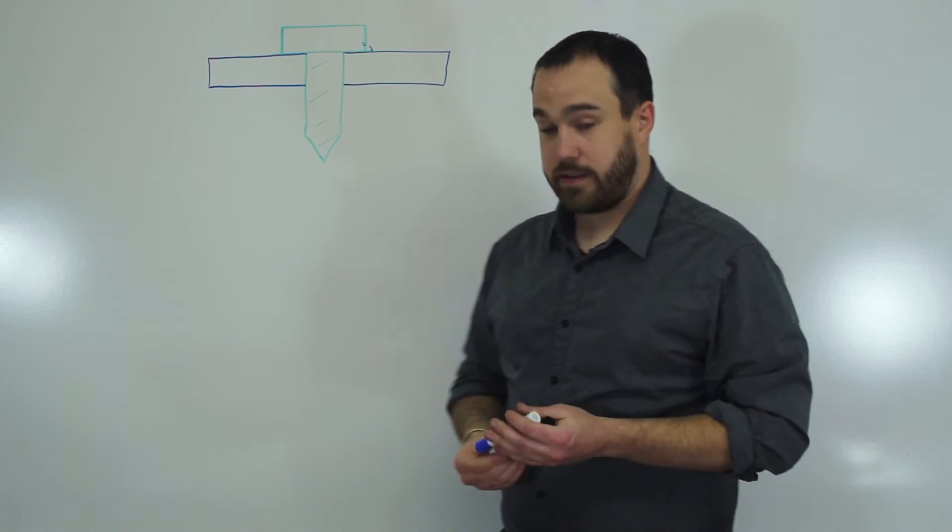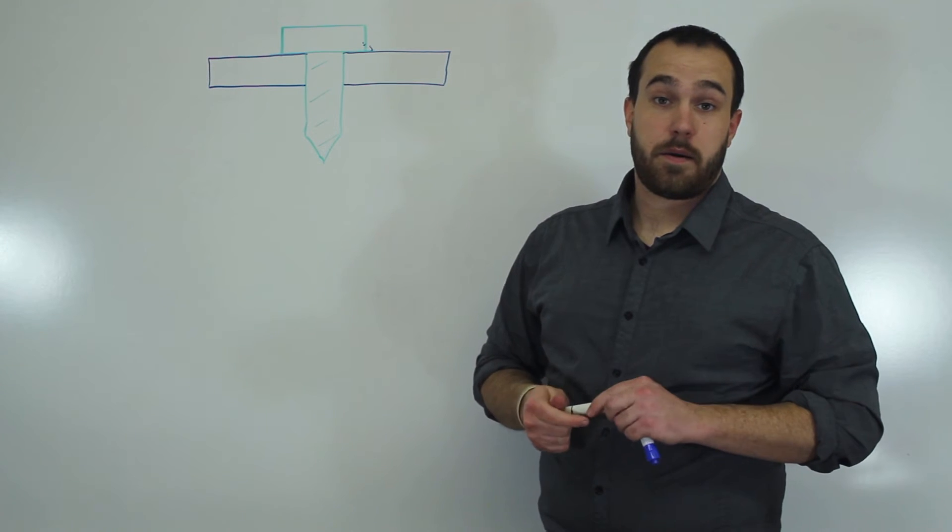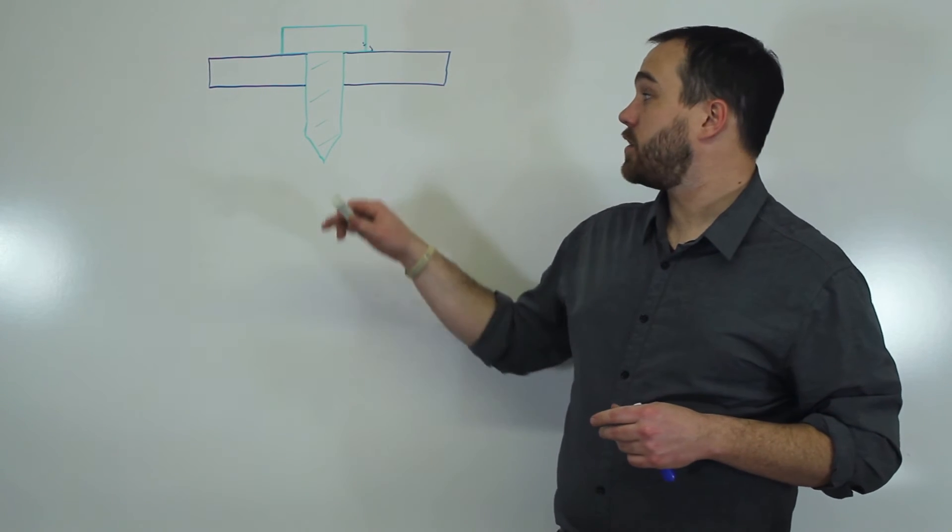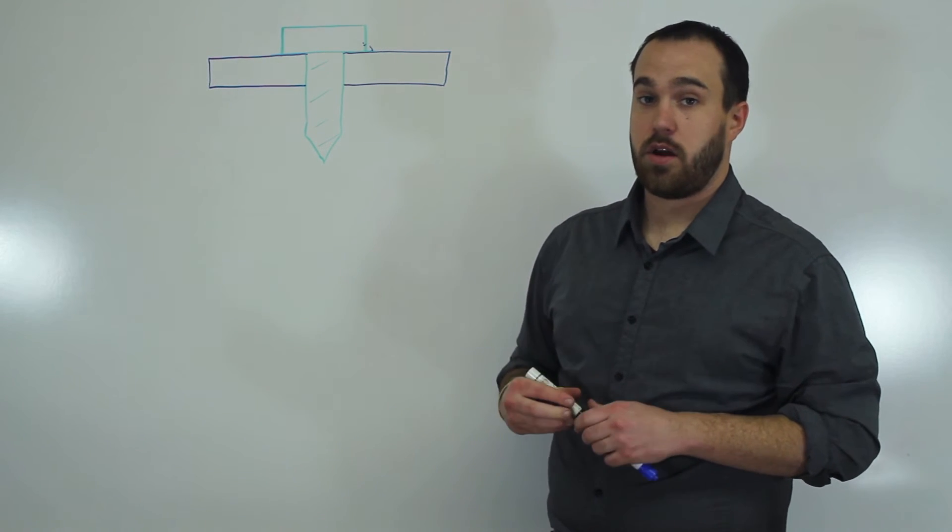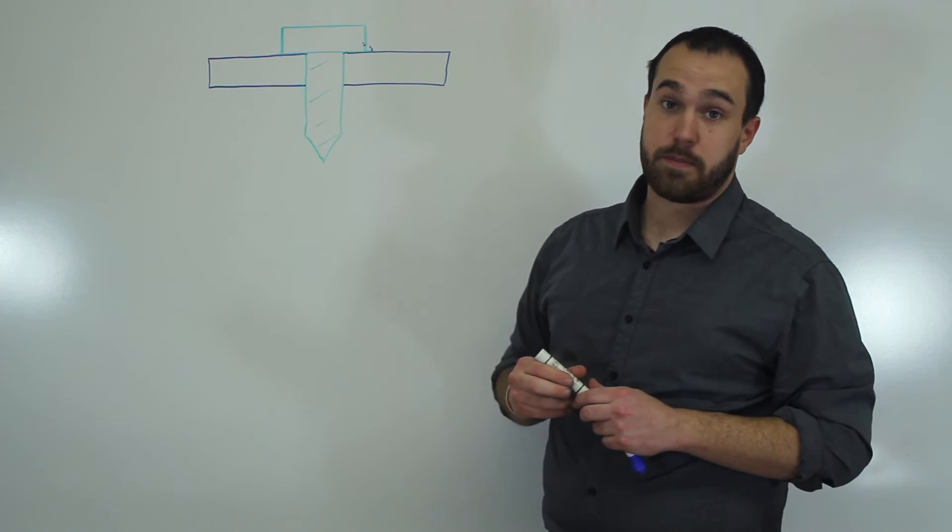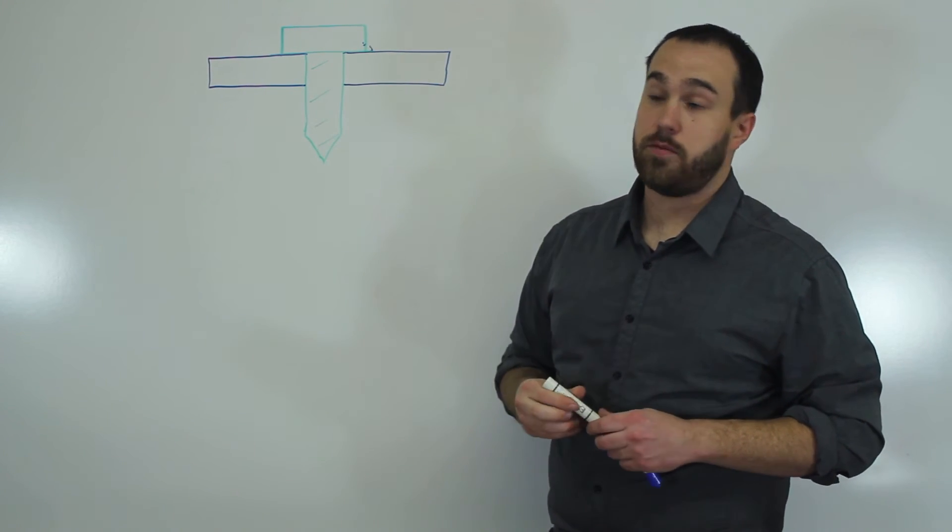You can protect against the galvanic corrosion very easily by choosing parts that are protected. So if this steel bolt was actually a zinc coated steel, then it would be protected by that zinc because the zinc has a lower electrical potential than the aluminum does.